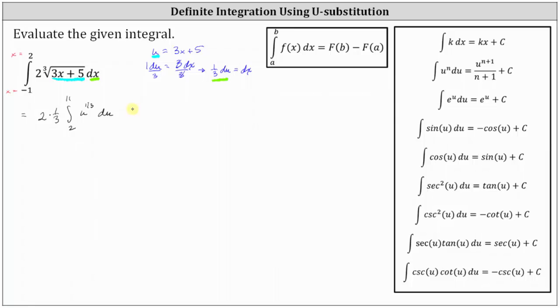And now we integrate with respect to u. We have two-thirds times u to the power of one-third plus one, which is four-thirds, divided by four-thirds.